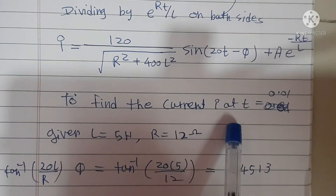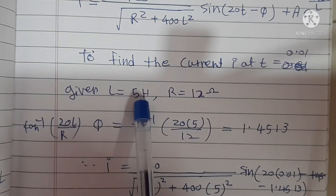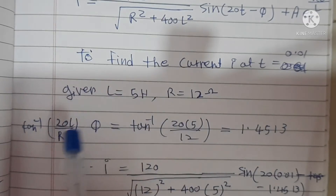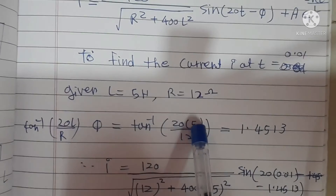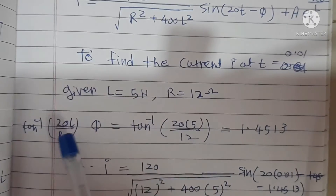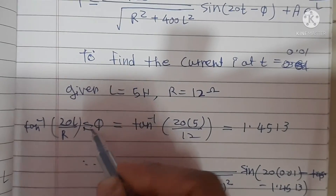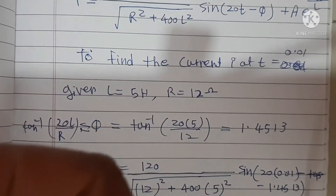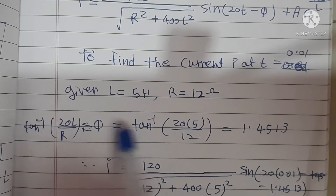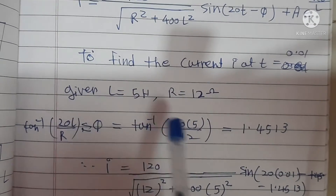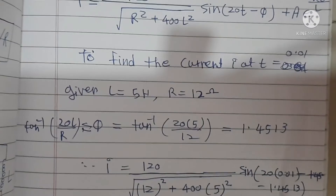To find the current I at time T equal to 0.01 seconds, we substitute the given values: inductance L equals 5 Henrys and resistance R equals 12 ohms. First we calculate tan(φ): φ equals tan⁻¹(20L/R) equals tan⁻¹(20×5/12). After calculating, we get φ approximately equal to 1.4513 radians.